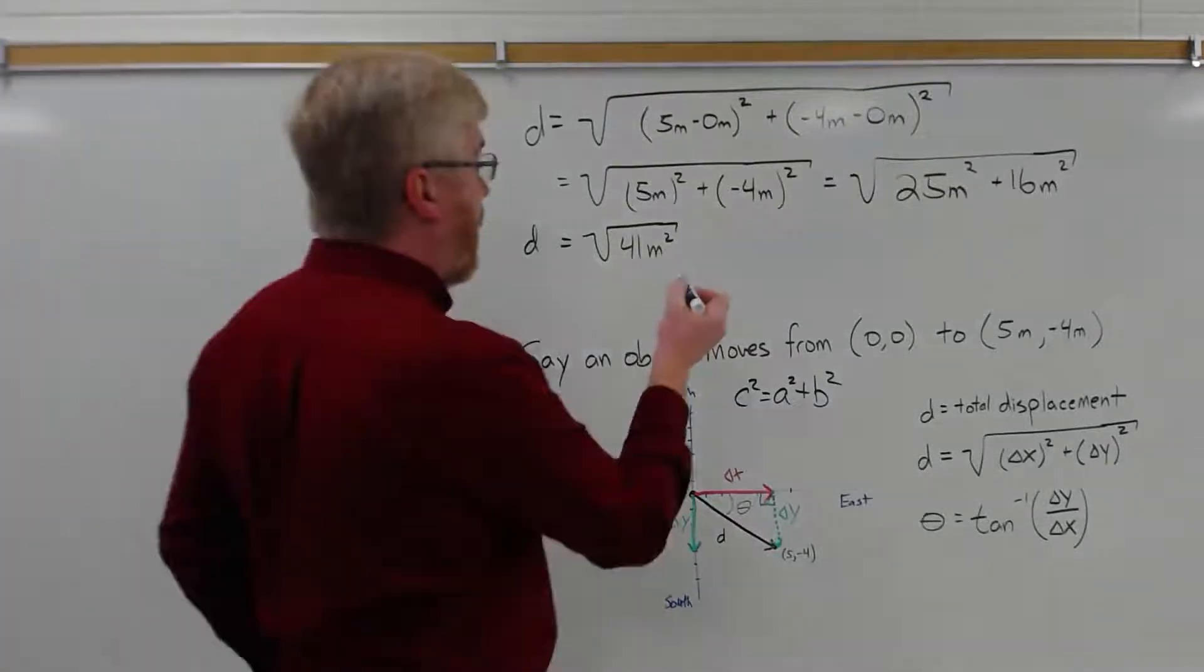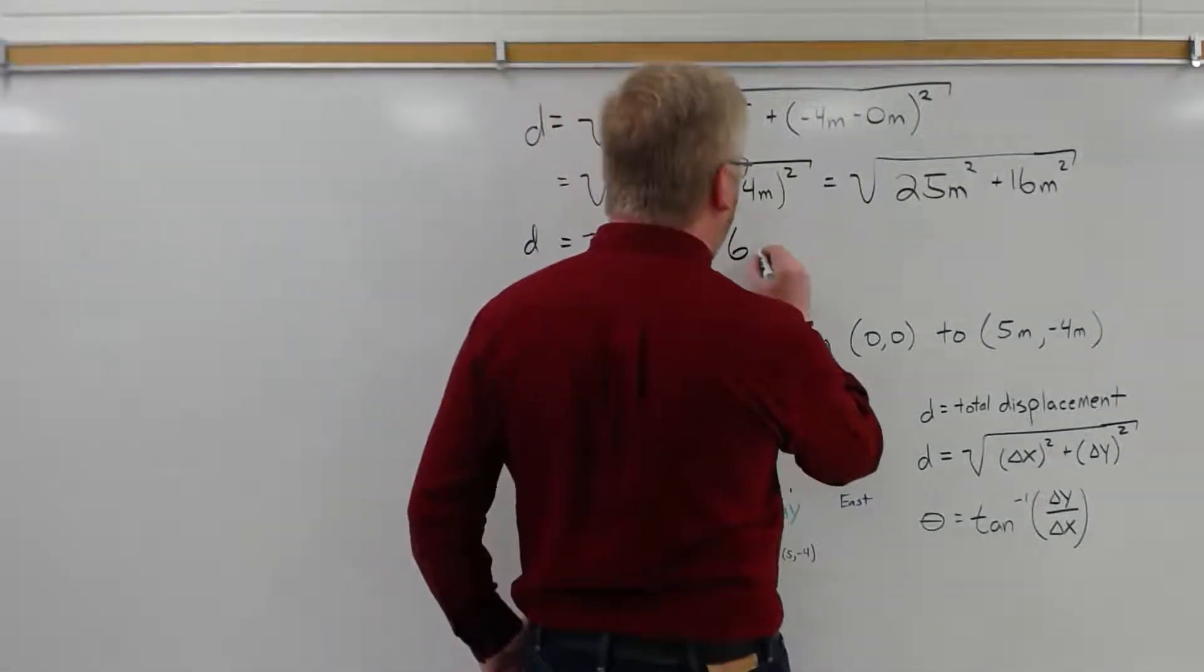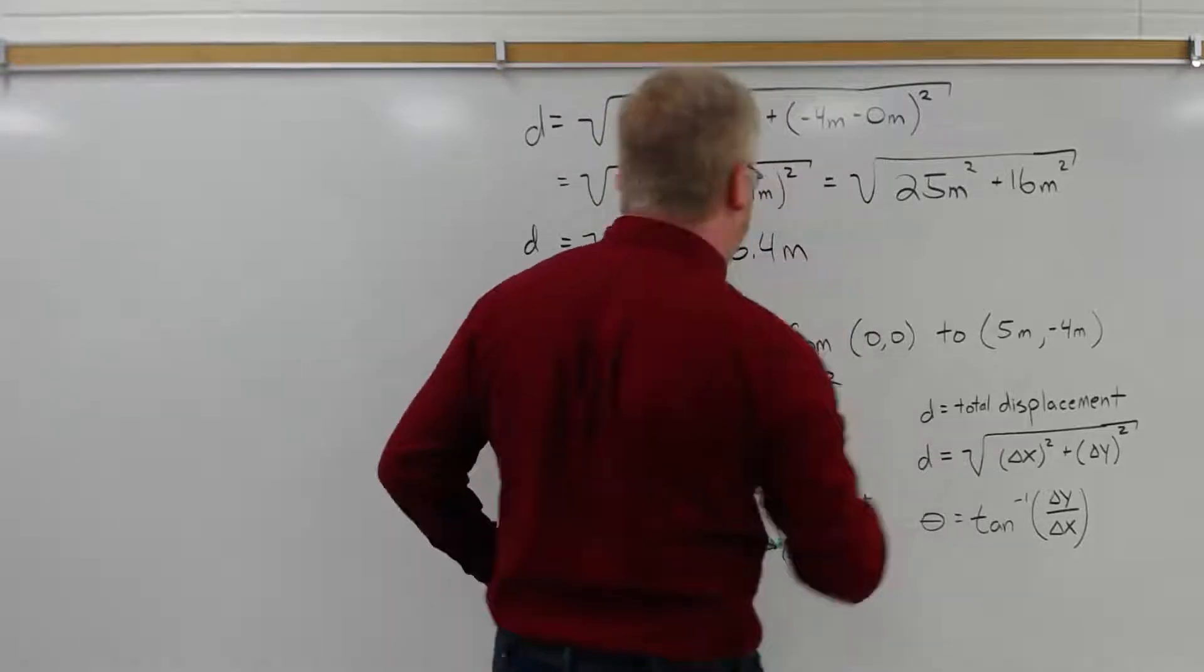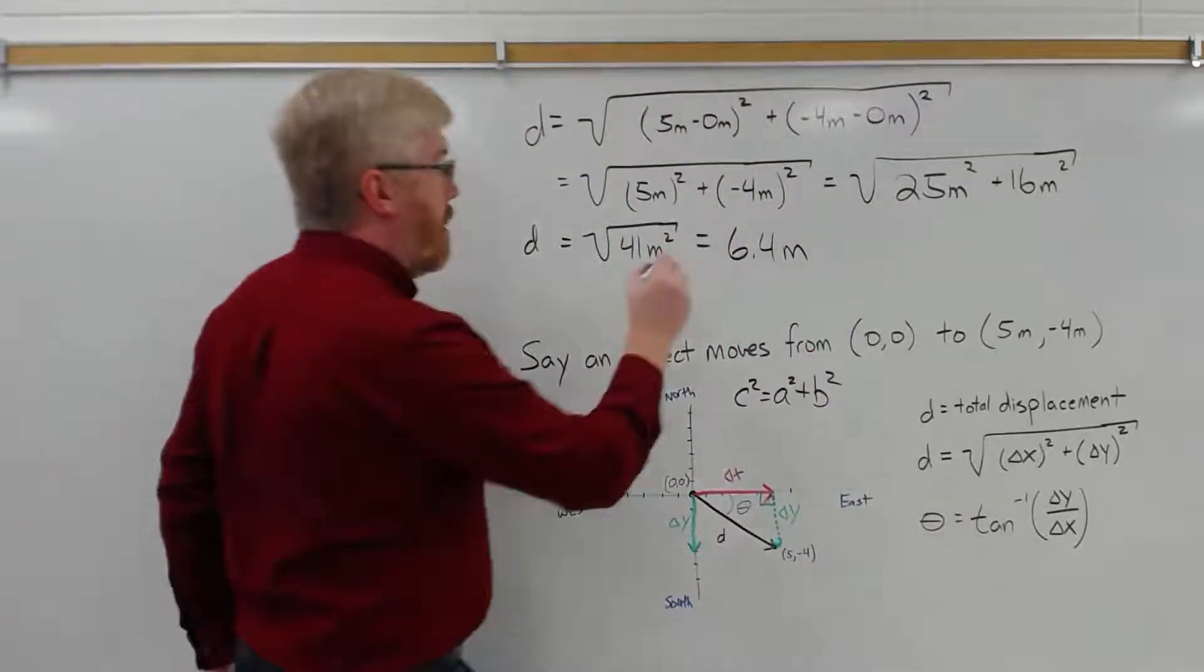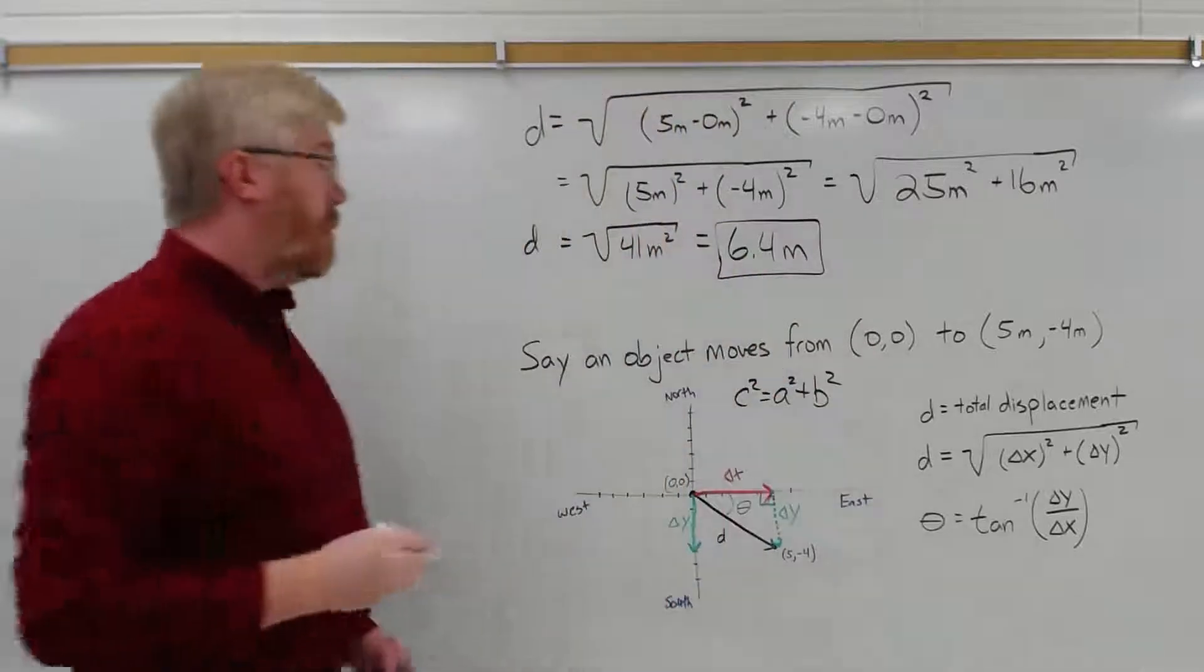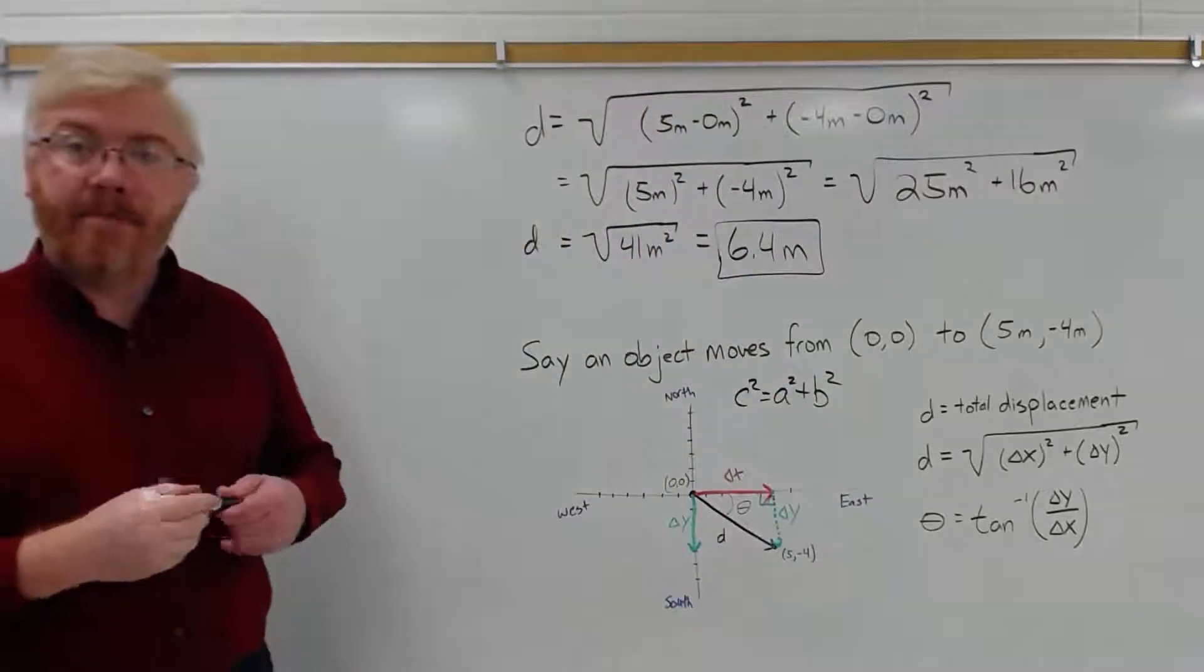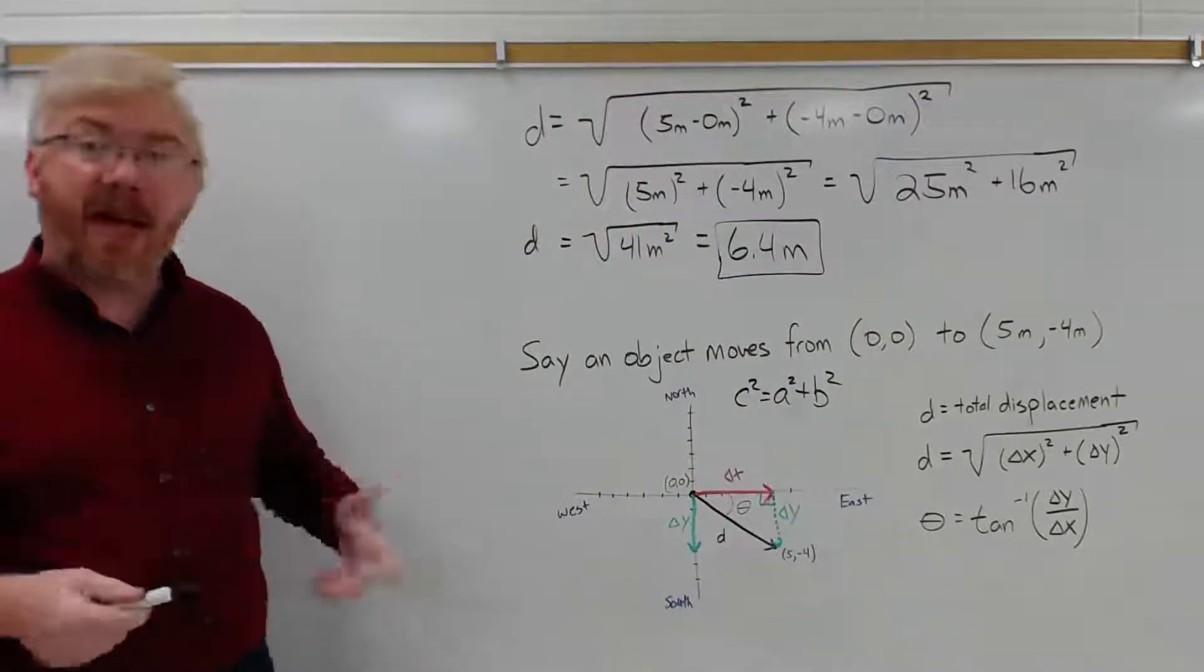Turns out to be, plug that into your calculator, turns out to be about 6.4 meters. So that's the length of that vector D, using the Pythagorean theorem.